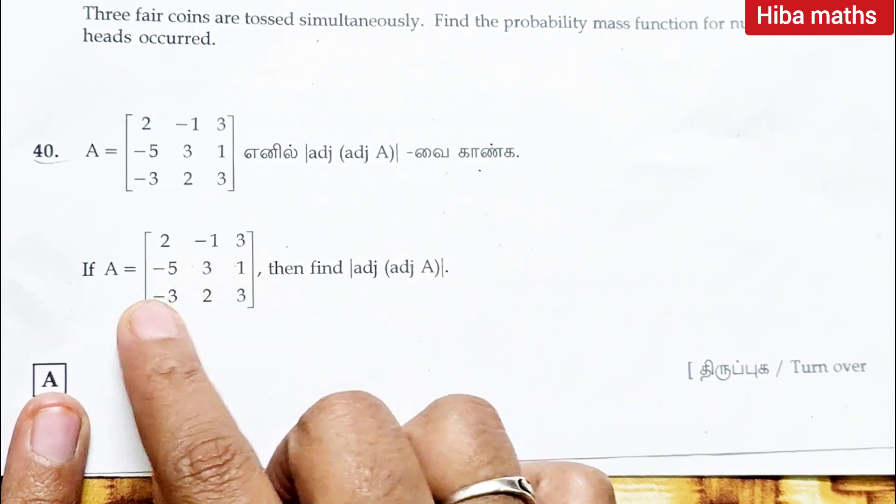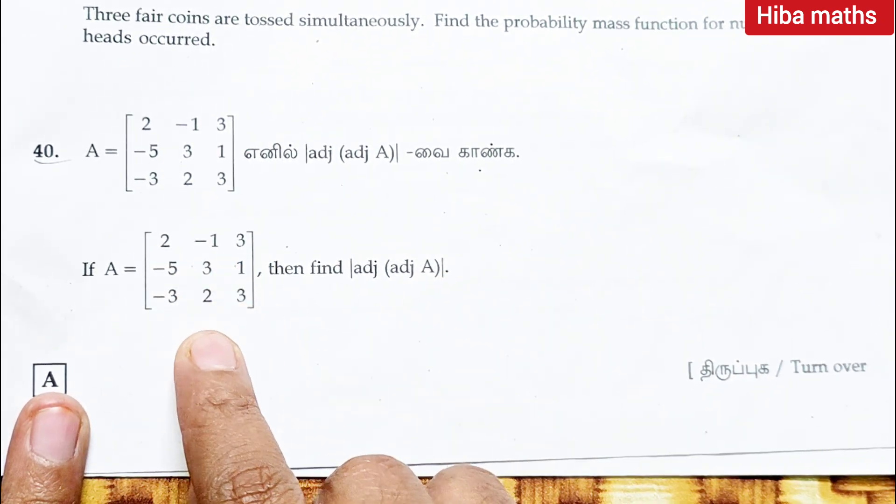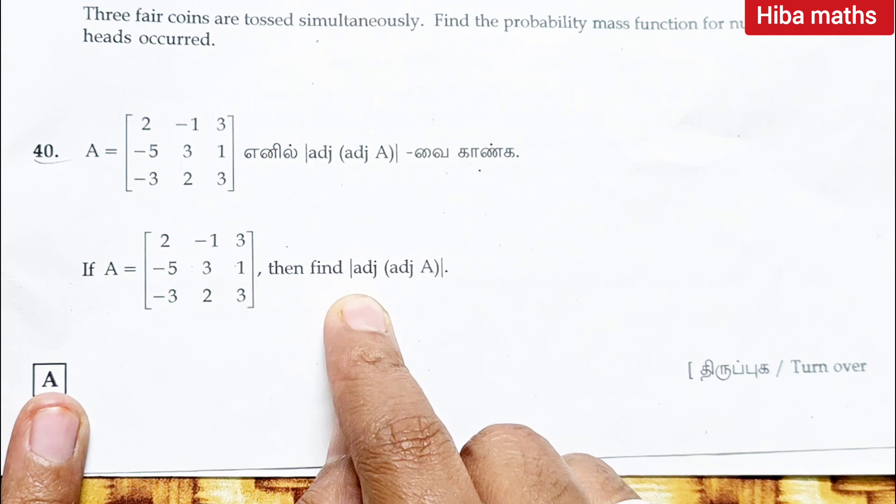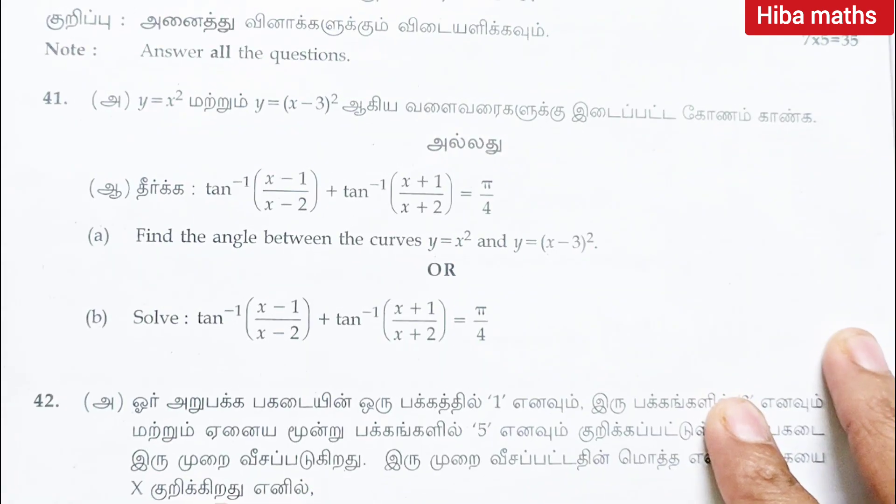Question 40: if a is equal to 2 minus 1 3 minus 5 3 1 minus 3 2 3, then find adjoint of adjoint of a. Five more questions.